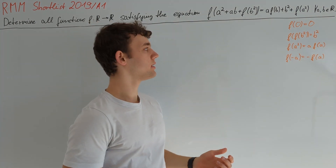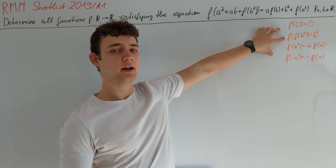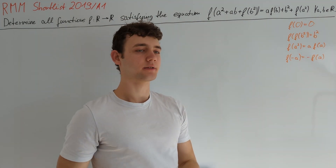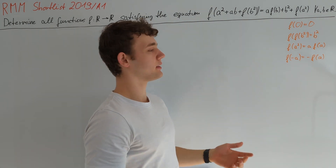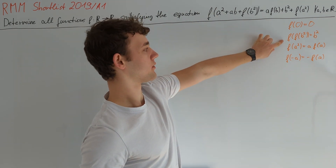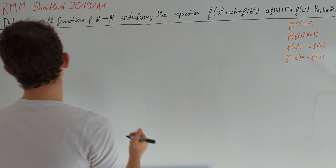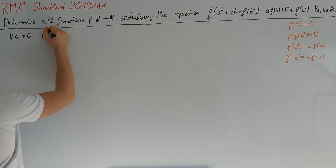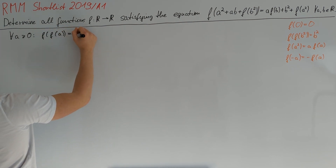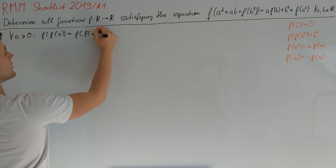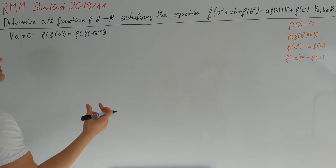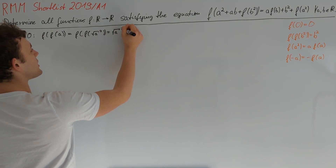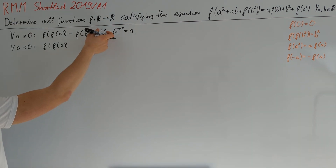We haven't yet fully used P(0, b), namely that f(f(b²)) = b². This equation is really useful. Since in the real numbers the set of squares is exactly the set of non-negative reals, this tells us f(f(a)) = a whenever a is non-negative. We can prove this: for all a ≥ 0, f(f(a)) = f(f((√a)²)) = (√a)² = a.